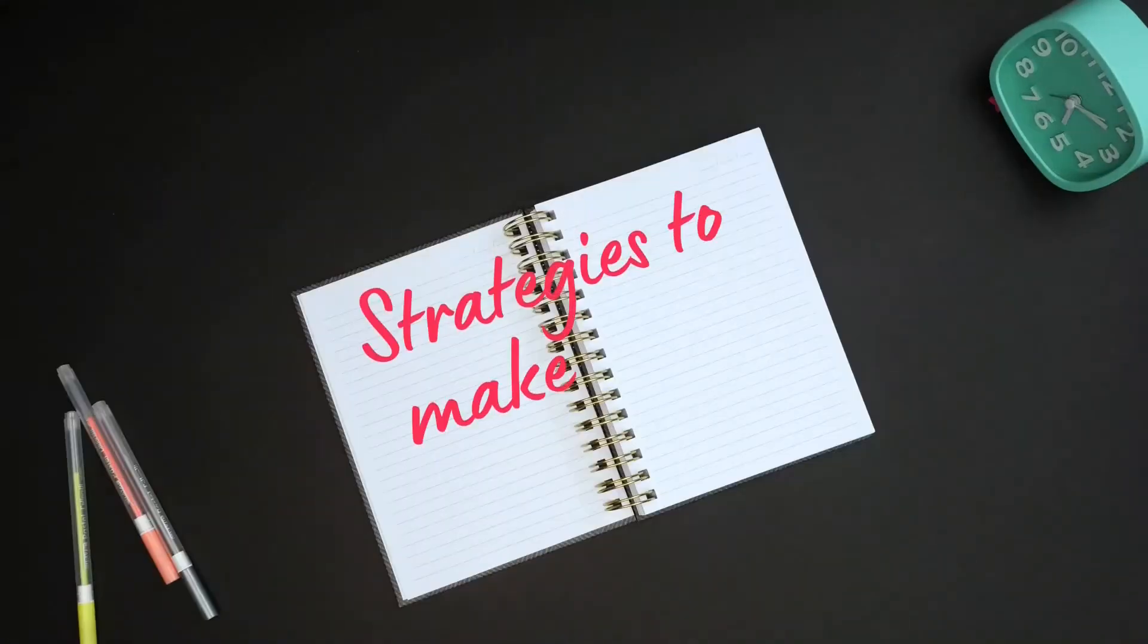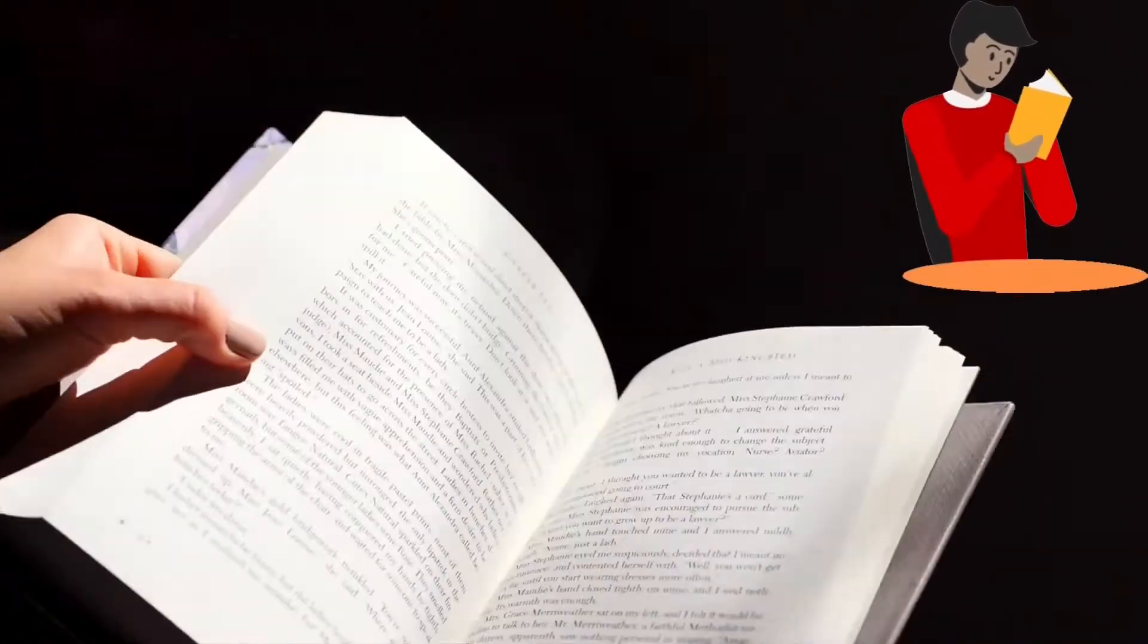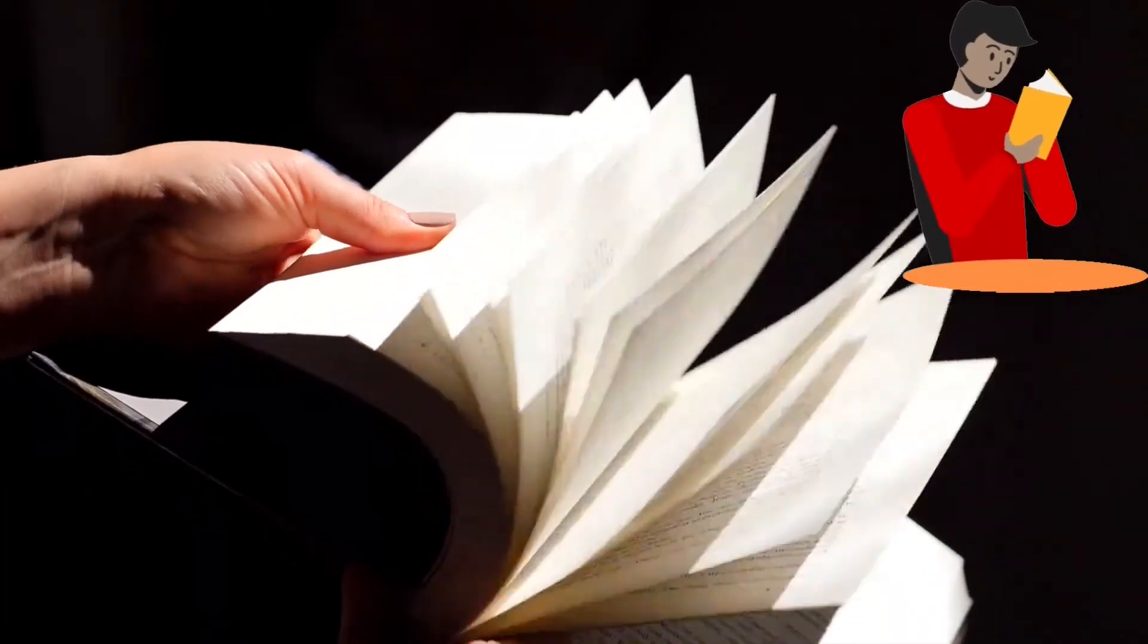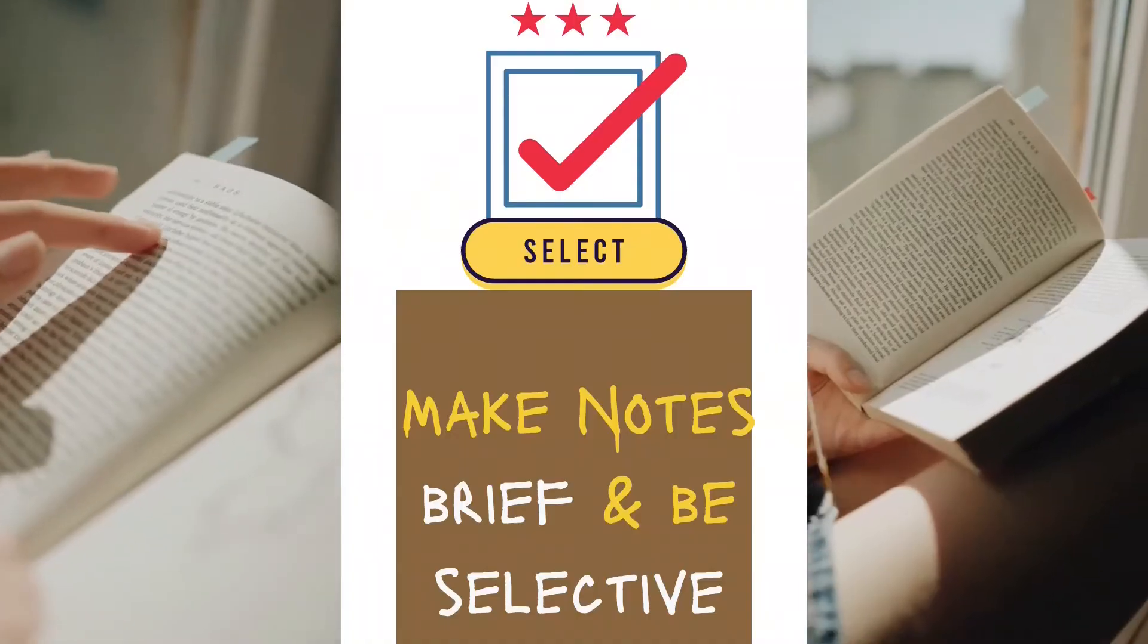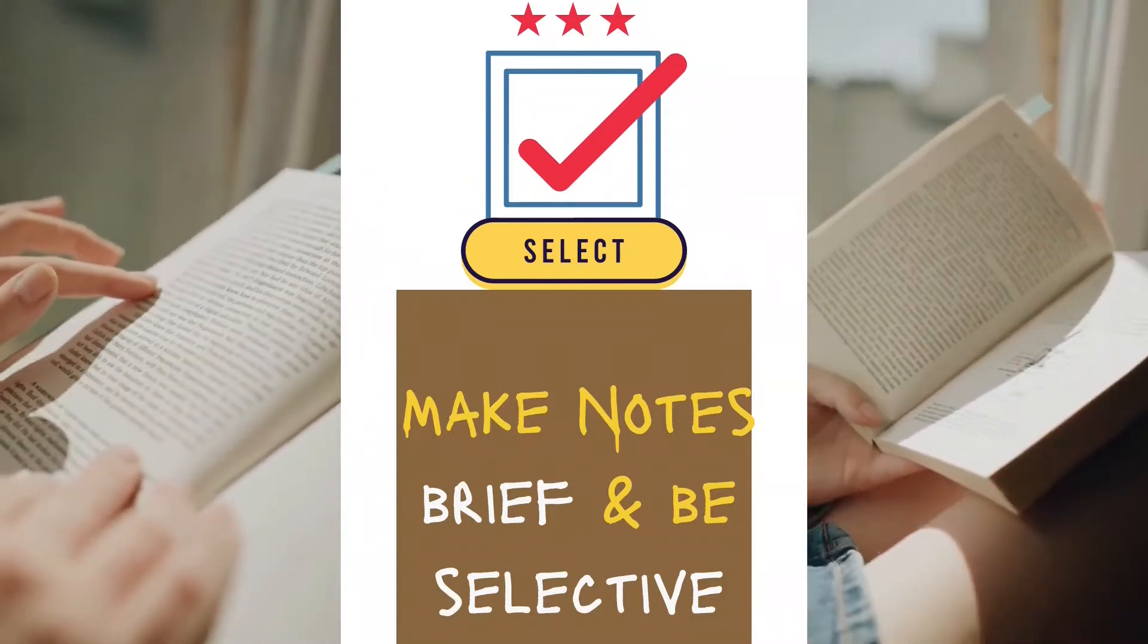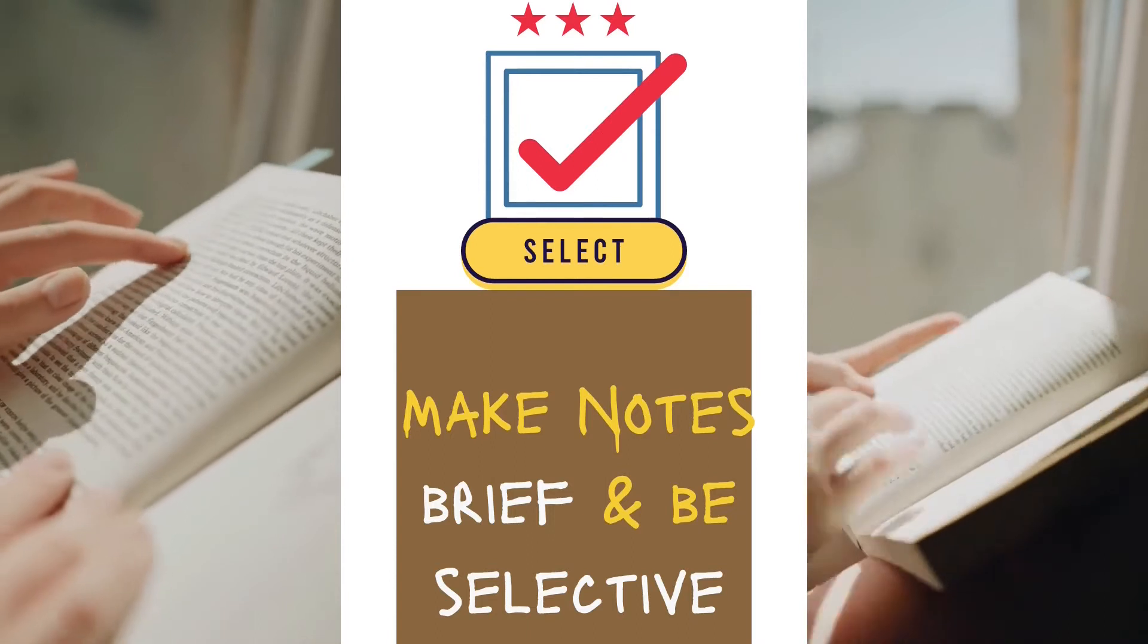Now, before explaining the third R, let me tell you some strategies to make your handwritten notes user-friendly. First point is make your notes brief and be selective. For that, read the original text multiple times, ensuring you don't miss any critical point. Ensure the summary is much shorter than the original source.